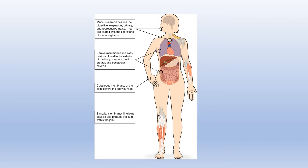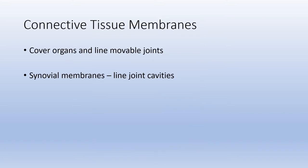This picture shows the different subtypes of membranes, giving examples of where they may be found, such as mucous membranes, serous membranes, cutaneous membrane, and synovial membrane. The connective tissue membrane covers organs and lines movable joints. The synovial membrane is an example — it lines the joint cavity, and a synovial joint is a movable joint. It is also involved in secretion of synovial fluid that helps lubricate that joint.